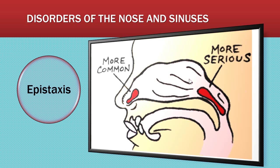Posterior nasal bleeding is more serious because a patient can lose a lot of blood very quickly. Watch the patient to see how many times they're swallowing. If they're swallowing rapidly, or if they're unconscious and bleeding posteriorly, contact the rapid response team. Posterior nasal bleeds must be stopped with posterior packing and a nasal epistaxis catheter or gel tampon.